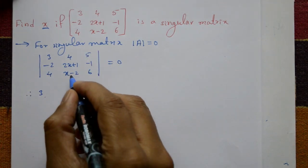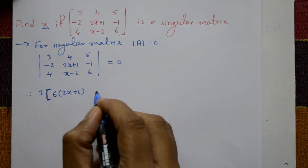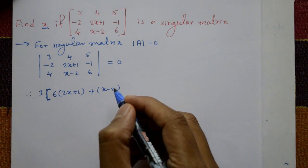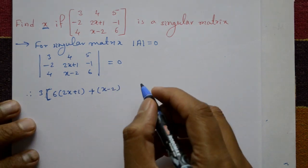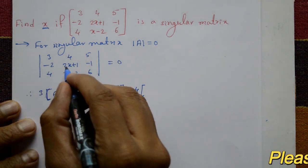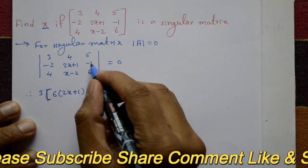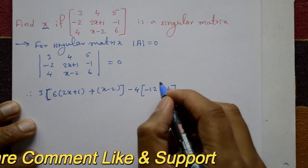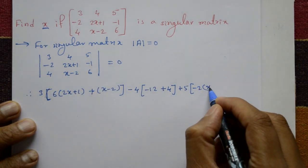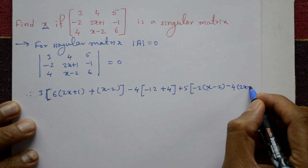Therefore: 3 into multiplication — 6 into (2x plus 1) minus (x minus 2) — plus minus 4 into (minus 2 into 6 is minus 12, minus 4 into minus 1 is plus 4), next element plus 5 into (minus 2 into (x minus 2) minus 4 into (2x plus 1)).